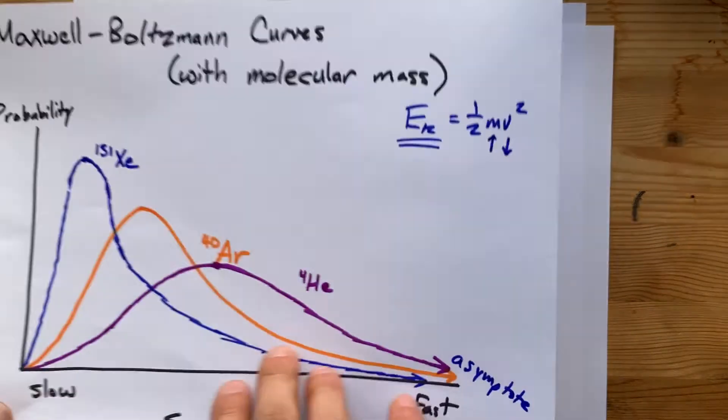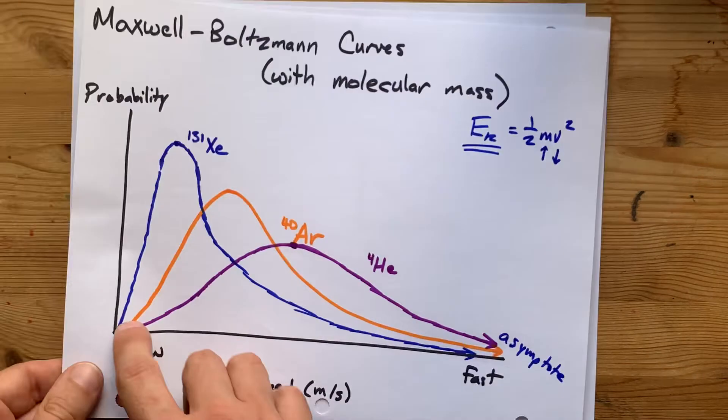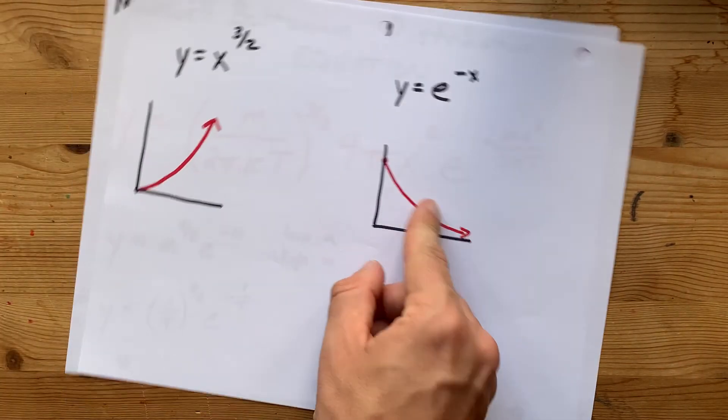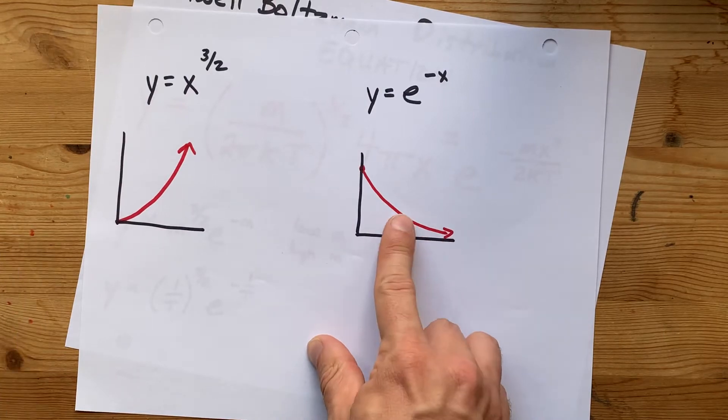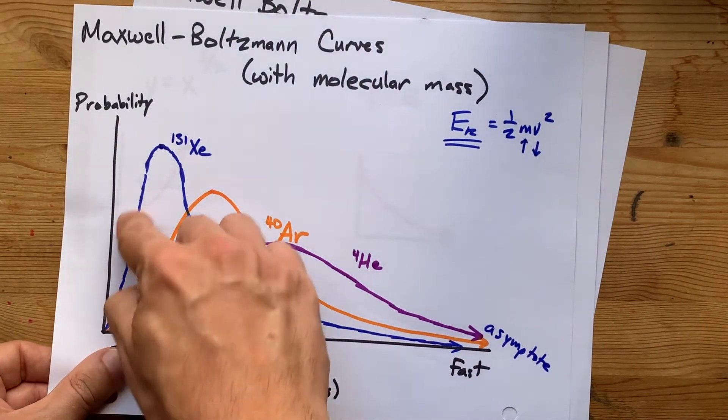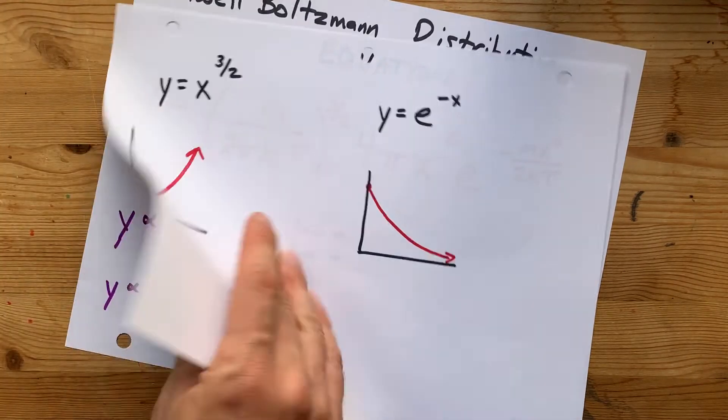So these curves are a hybrid of the parabolic increase, which you can kind of see here, and the exponential decay down towards but not quite reaching 0 here. And then there's a peak where they fight and start to cancel each other out.